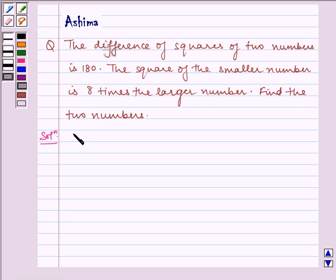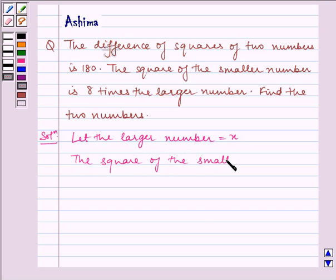Now let us write the solution. Let the larger number be x. The square of the smaller number is equal to 8x, and square of larger number is equal to x square.